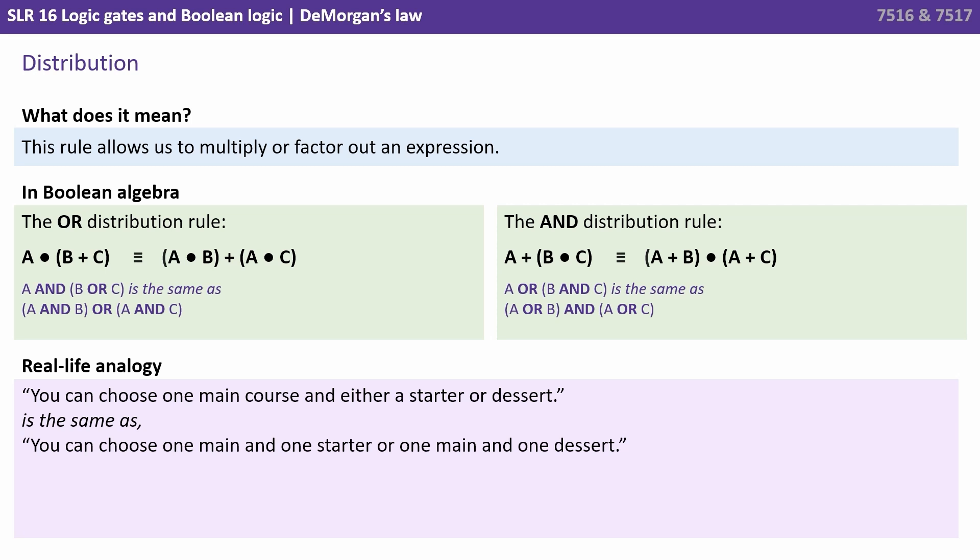We then have the rule of distribution. This rule allows us to effectively multiply or factor out an expression. And again there are two versions of this. The OR and the AND version which work in the same way. So here we have A OR B and C. We can multiply that out into two sets of brackets and say A and B OR A and C. With the AND rule we have A and B and C. And again we can factorise that out to say A OR B and A OR C. Let's look at a real life analogy. We're taking the phrase you can choose one main course and either a starter or dessert. To say you can choose one main and one starter or one main and one dessert. It's the same thing.